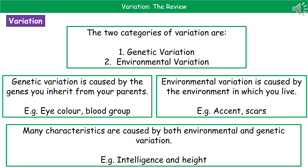When we're thinking about variation, we've actually got two categories. The first one is genetic variation and the second is environmental. One of the common questions that comes up on the exam paper is asking you about those causes of variation, so what they're looking for are both genetic and environmental.